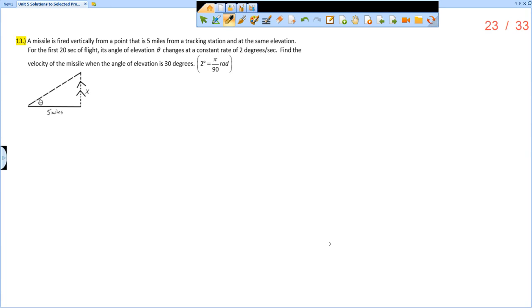Find the velocity of the missile when the angle of elevation is 30 degrees. And then I give you a little hint here that 2 degrees is pi over 90 radians.